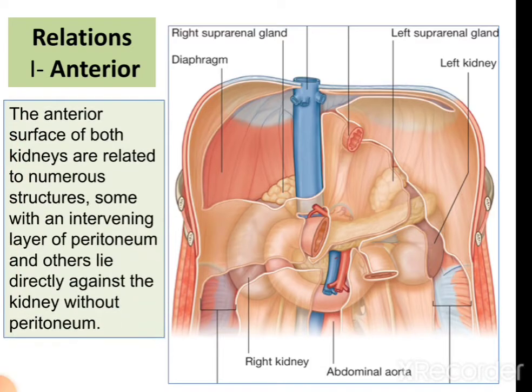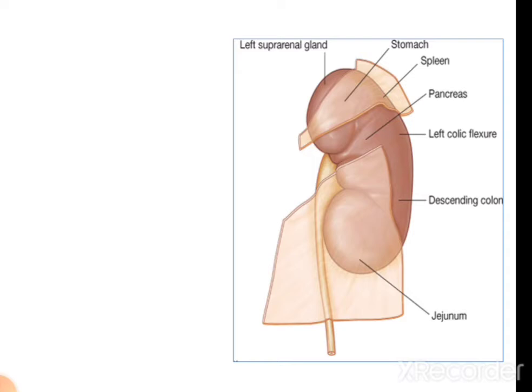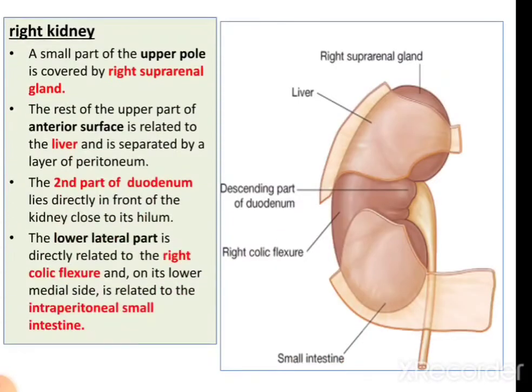On the anterior side of the kidneys, they are related to numerous structures. On the left side, the anterior surface is covered by the left suprarenal gland, then below that the stomach, then the spleen, pancreas, and the descending colon. On the right side, the anterior relations are the right suprarenal gland, then the liver, then the descending part of the duodenum, then the right colic flexure, and the small intestine.